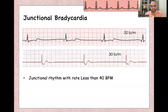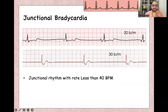Junctional bradycardia is junctional rhythm with a rate of 20 to 40, or less than 40. This is a junctional rhythm — P-wave inverted. Here the P-wave follows the QRS, and both of them have a rate less than 40 beats per minute, and you will find narrow complex rhythm.